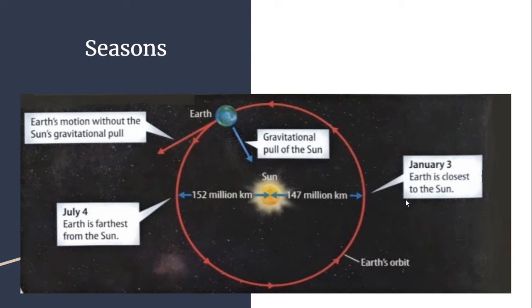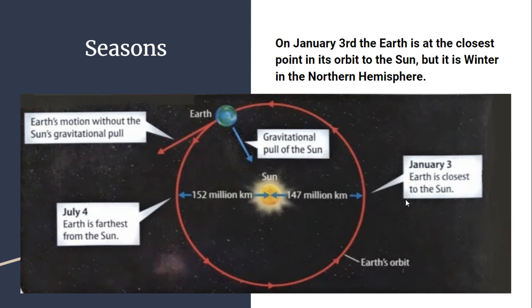On January 3rd, we are the closest we get to the Sun — 147 million kilometers away, so we've gotten 5 million kilometers closer. If proximity caused our seasons, January should be hot. But that's not what we experience. It's cold in January.